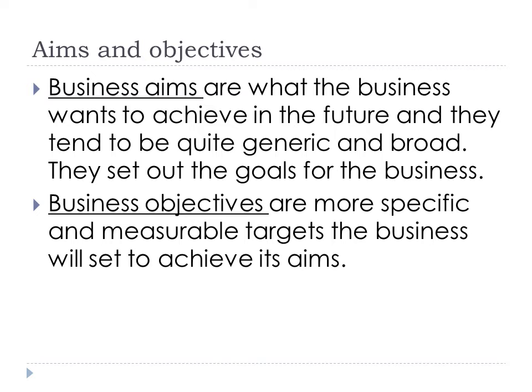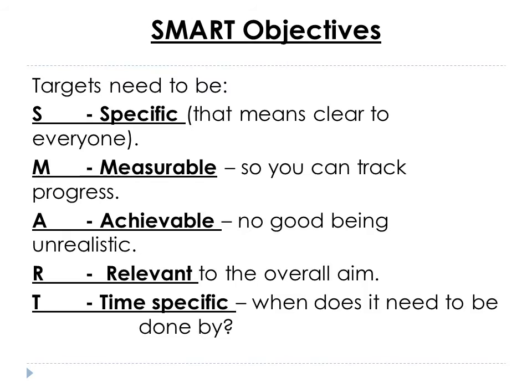Your first objective might be to achieve three A's at A-level by a certain time frame. Objective number two might be to get a degree in medicine by, say, 2028. Your third objective might be to be in the radiology department of a major hospital by 2032. So you've got your aim of becoming a doctor, and then you've got the objectives that make it possible to achieve that aim.